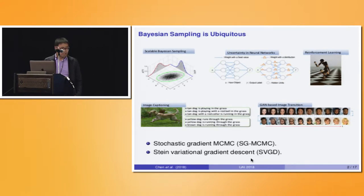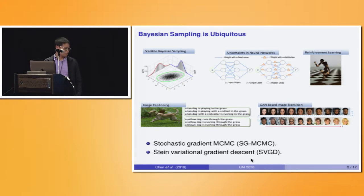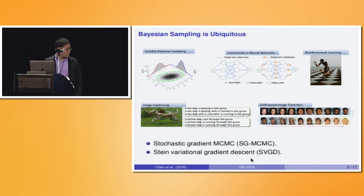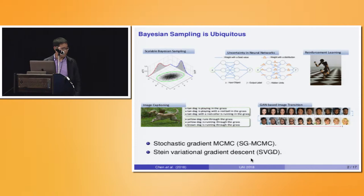Among many Bayesian sampling methods, probably the two most popular are Stochastic Gradient MCMC and Stein Variational Gradient Descent. One contribution of our work is to propose a unified framework to unify these two sampling methods.